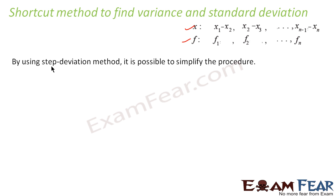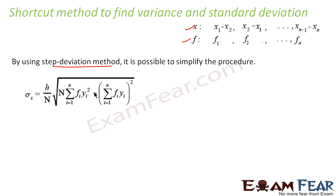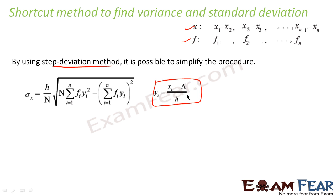Now let us discuss the shortcut method to find variance and standard deviation. By using the step deviation method, we can simplify the procedure. In that case, the standard deviation formula becomes h by n into root of (n into sigma fi·yi squared minus sigma fi·yi whole square), where yi is nothing but xi minus a by h, a is the assumed mean, and h is the class interval.